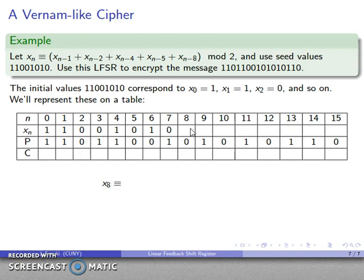So, let's see. I need this x8. So, that's going to be found by the preceding value plus the one before that plus the fourth value before it. So, that's x4 plus the fifth value before it. That's x3 plus the eighth value before it. That's x0 all taken mod 2. And so, now I have my numbers in my table. I can look those up. x7 is 0. x6 is 1. x4 is 1. x3 is 0. x0 is 1. And, again, taking all of these mod 2, that's going to give me 1. So, my x8 is going to be 1.